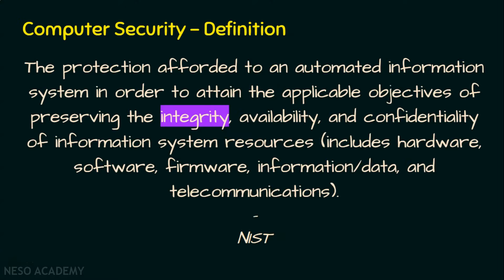The three important key terms of the definition are: integrity, availability, and confidentiality. If we understand all three, the definition becomes easy. Ultimately, we are providing security to the system, which includes hardware, software, firmware, data, and telecommunications — that is, communication at a distance. In this subject, we focus on security in all aspects of computer networks. If these three key objectives are clear, the definition will be clear, and we will see these three terms elaborately in the CIA Triad.